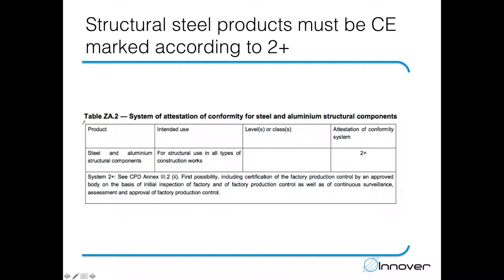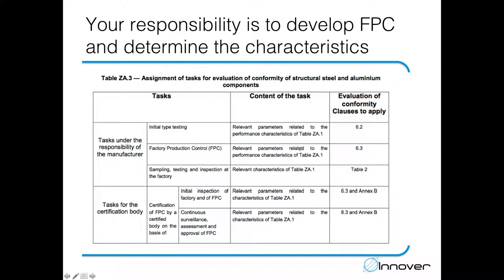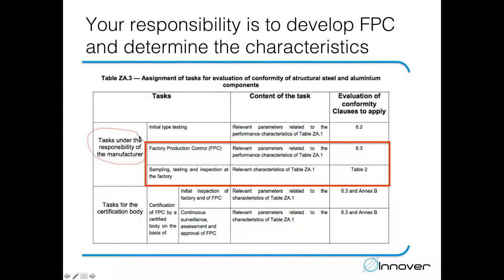Here we have a screen capture from Table CA2 in Appendix ZA. This deals with steel and aluminium structural components for structural use in all types of construction works. The attestation of conformity system is 2+. The tasks listed for the manufacturer include initial type testing, factory production control, and sampling, testing and inspection at the factory — three distinct tasks.